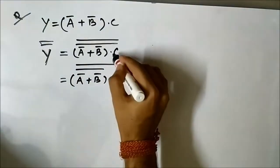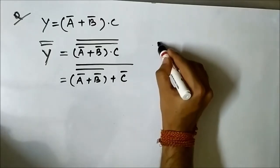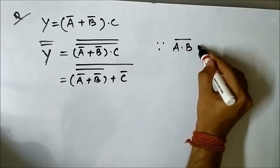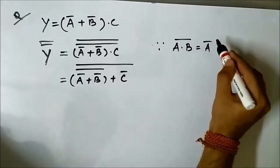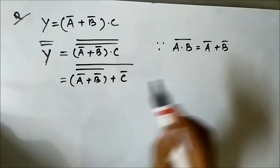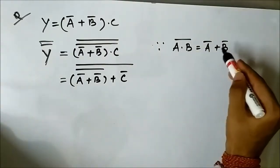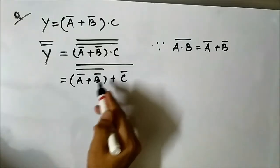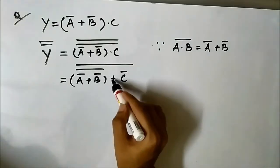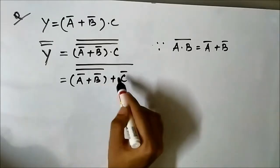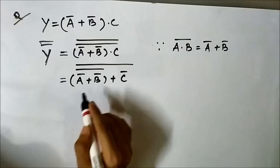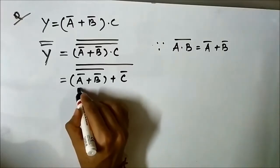The theorem we used here is: AB whole complement equals A complement OR B complement. So A AND B whole complement equals A complement OR B complement — that is what we used here. But again this is a problem because we have got two OR signs again; we have to convert them. So here first we will apply De Morgan's theorem.